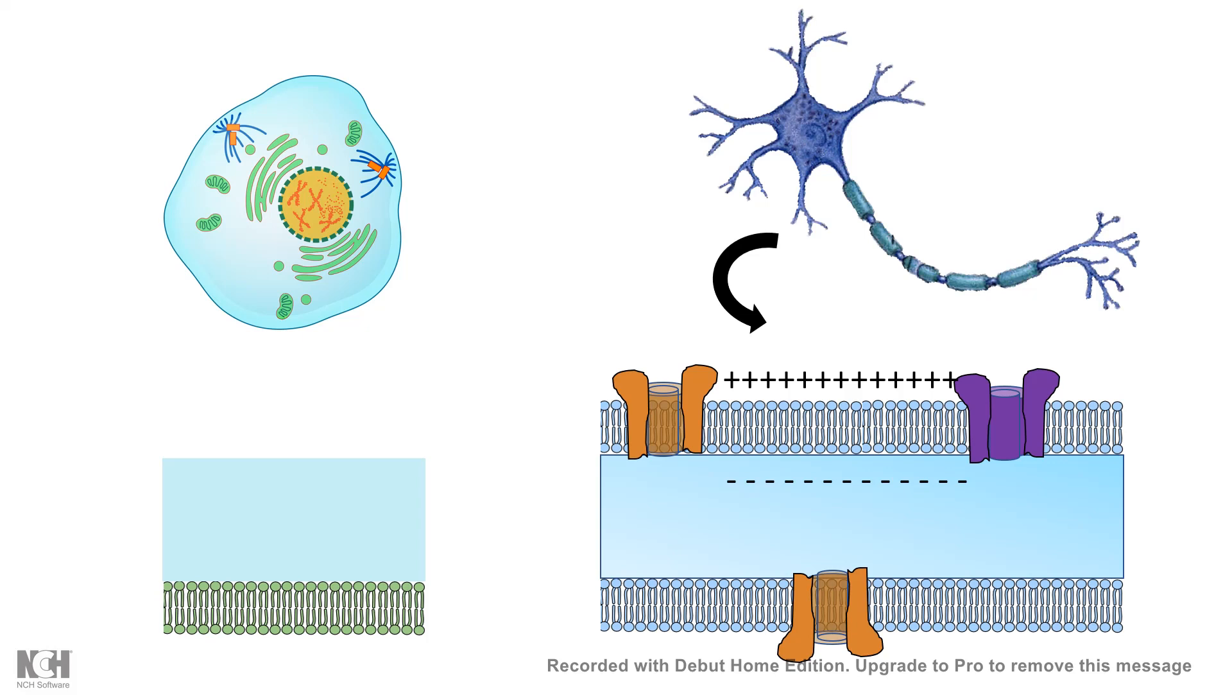But sometimes the membrane could separate charge. For example, a neuron's membrane is charged, whereas a normal cell's membrane is uncharged. And this has very different meaning.